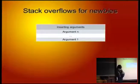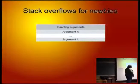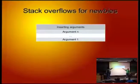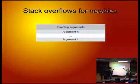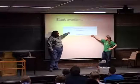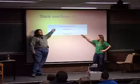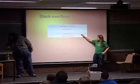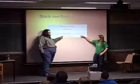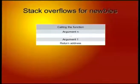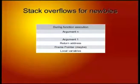Let's start with what's a stack overflow. When we want to do a function call, we insert some arguments — for example, this could be 'echo' and this one could be 'hello world'. Then we call the function, so we have to add our return address, which is where we are going to continue the execution of our code.